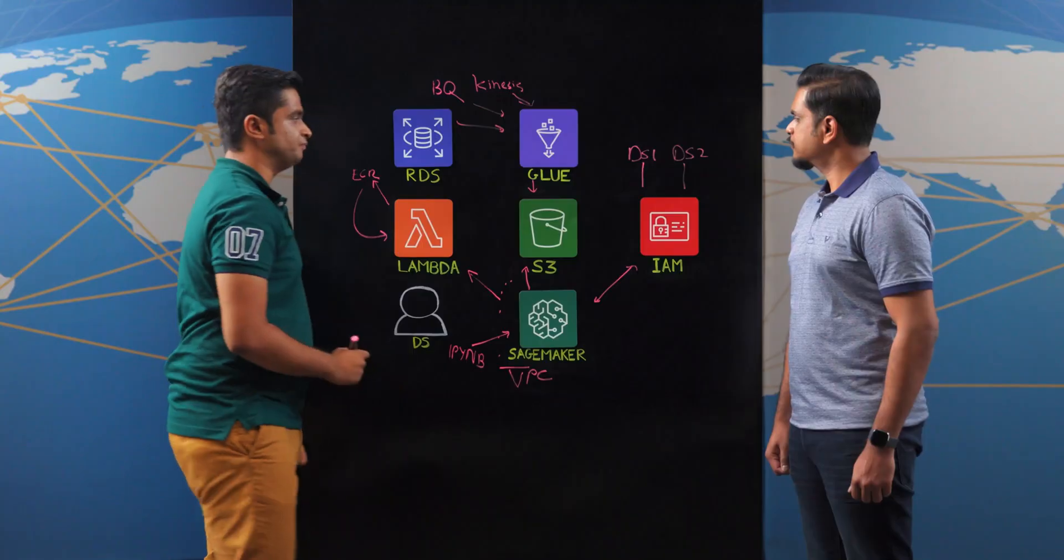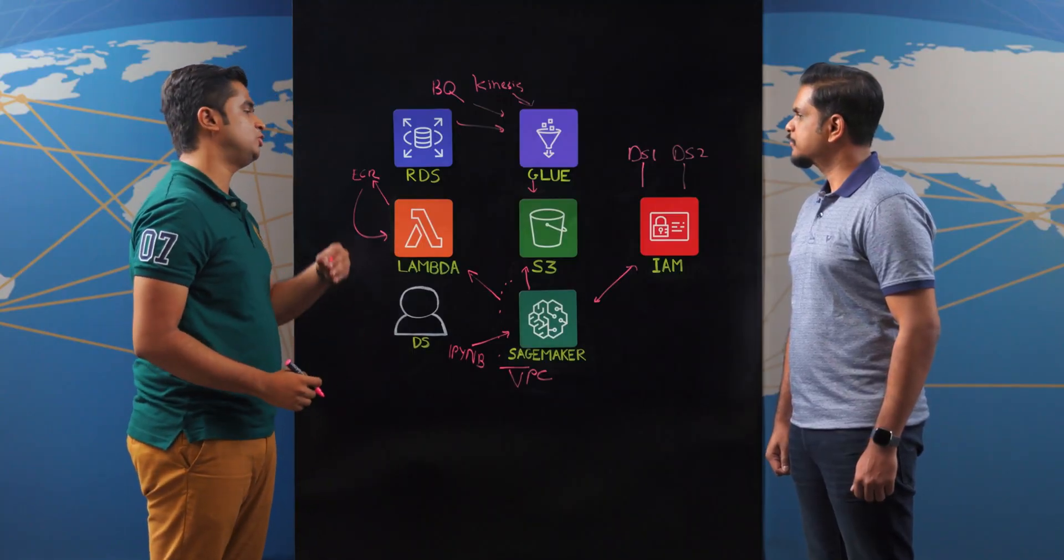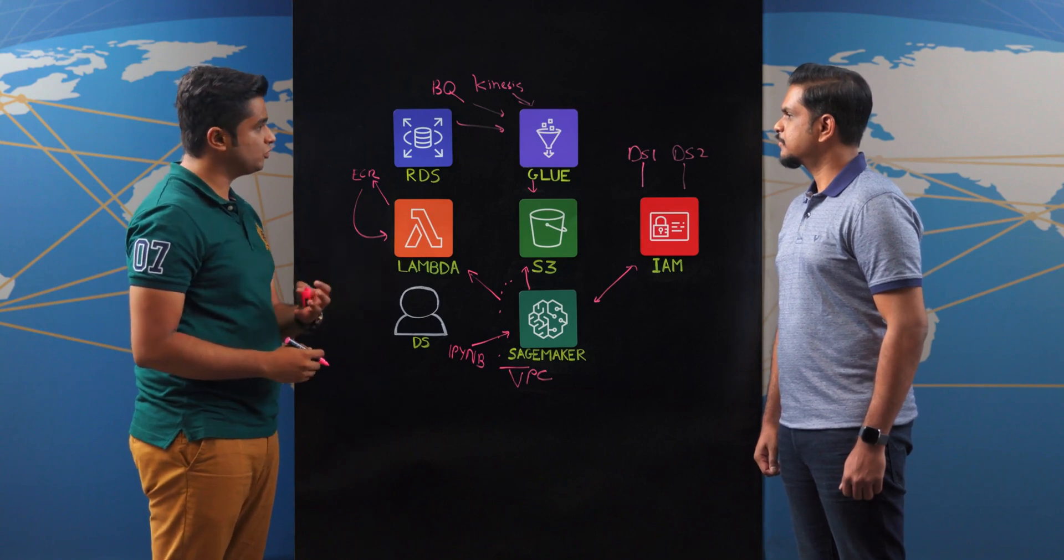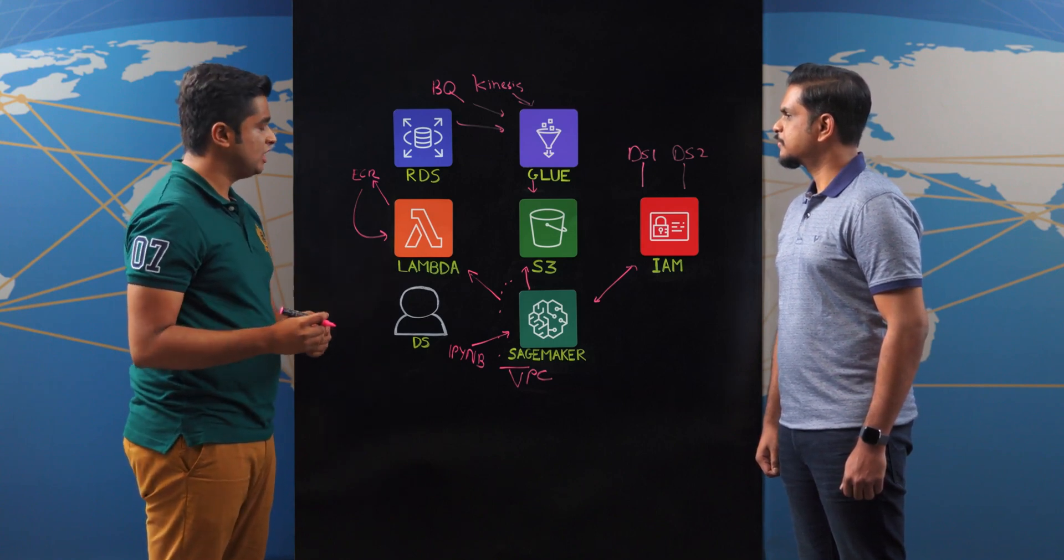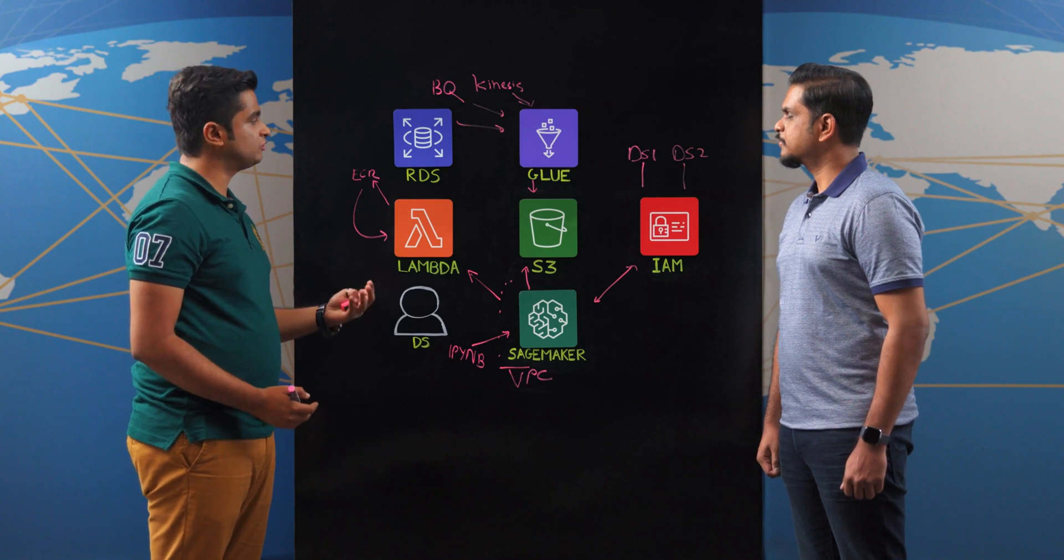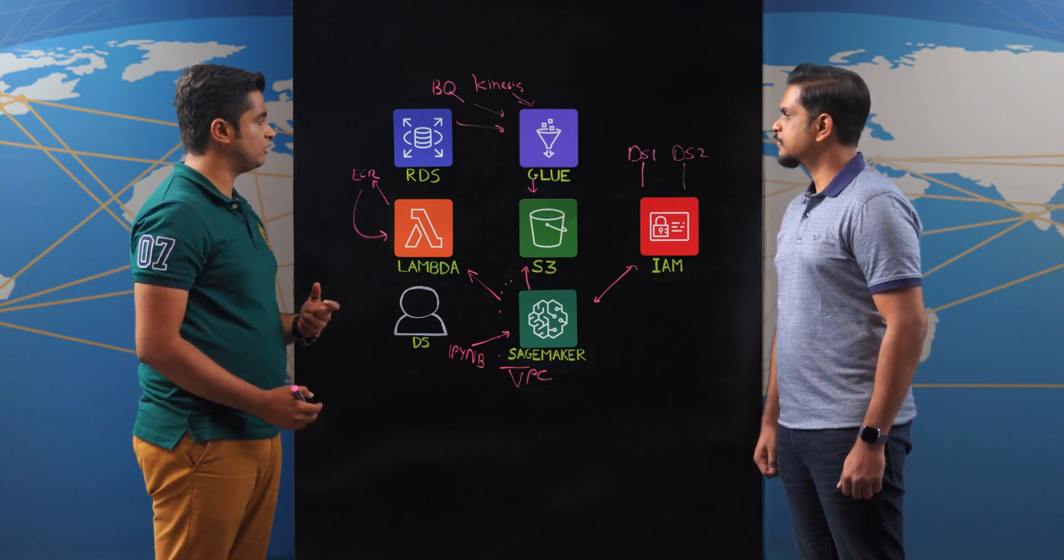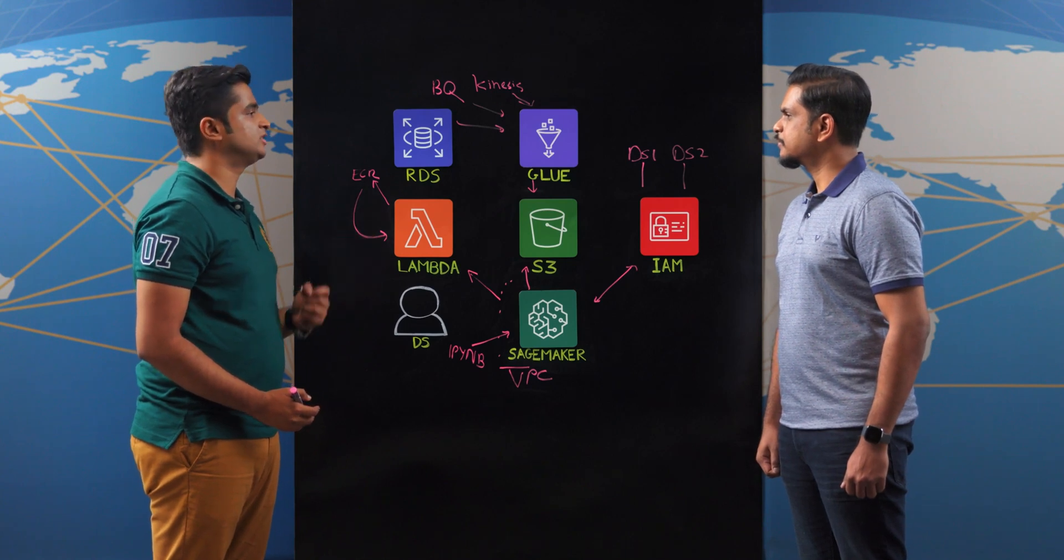On a secondary level, we have IAM where we have specified separate execution roles for different data science user groups. For example, data science user group 1 can only access customer data, while user group 2 can only access application data. Creating separate execution roles for each data science user group allows us to invoke workspace isolation, which helps us harden our security.